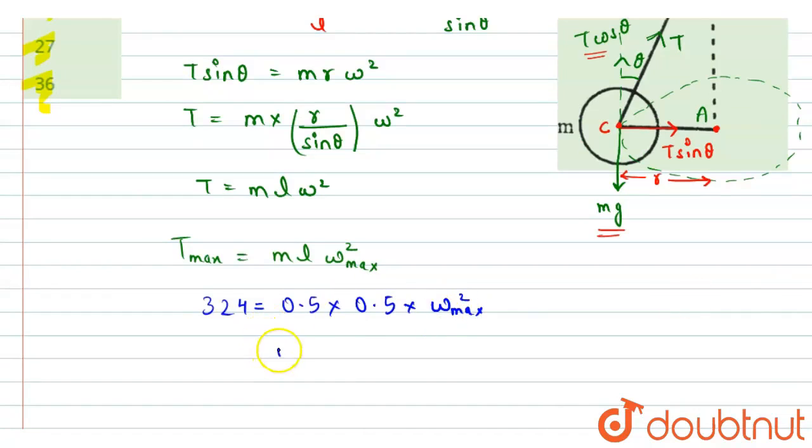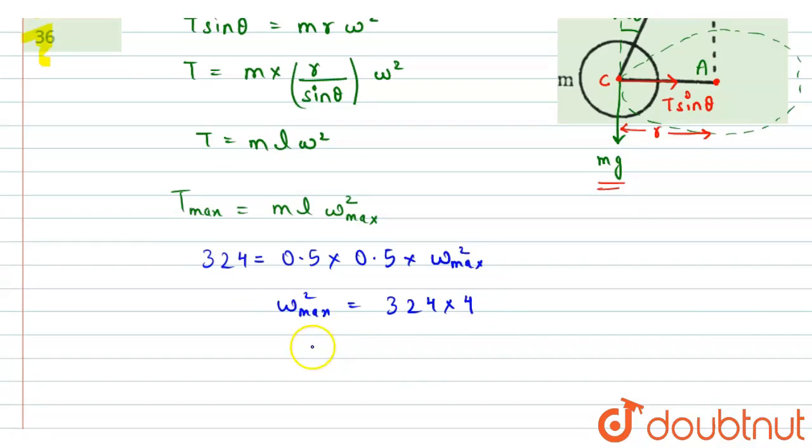So from here, we will get omega max whole square equals to 324 into 4. So after taking the square root both sides, we will get omega max equals to 18 into 2, so that is 36 radians per second. And this is the required answer.